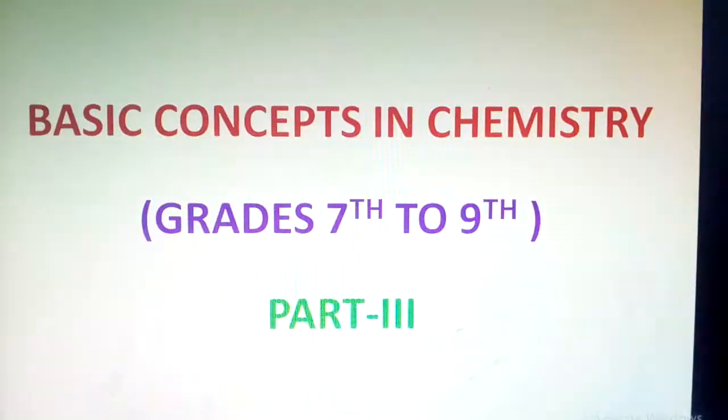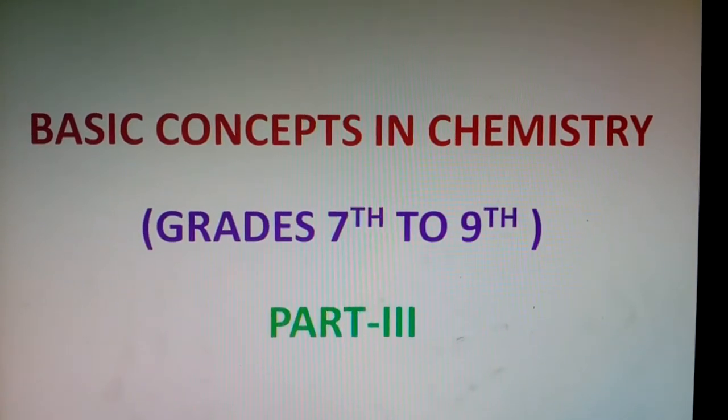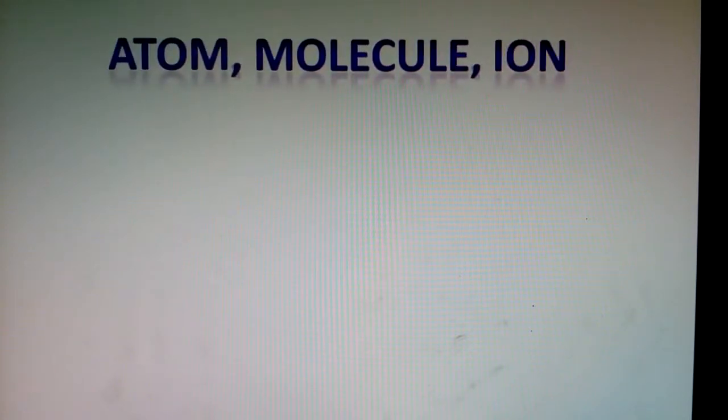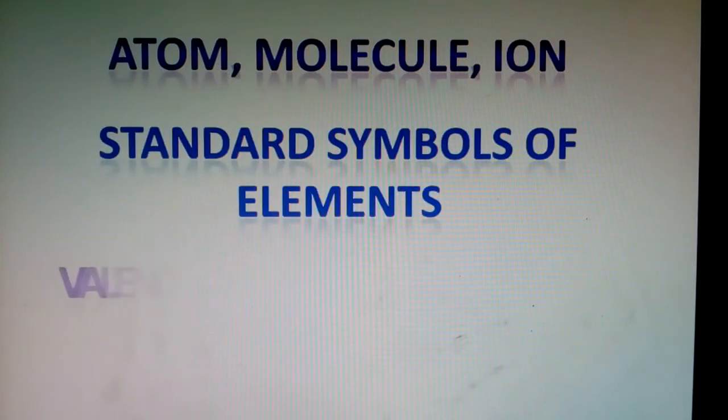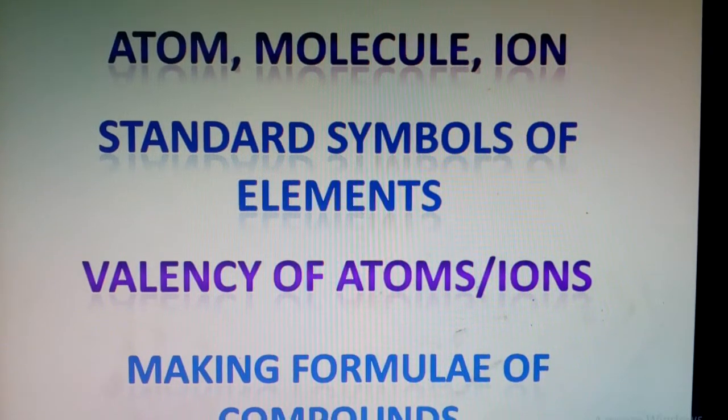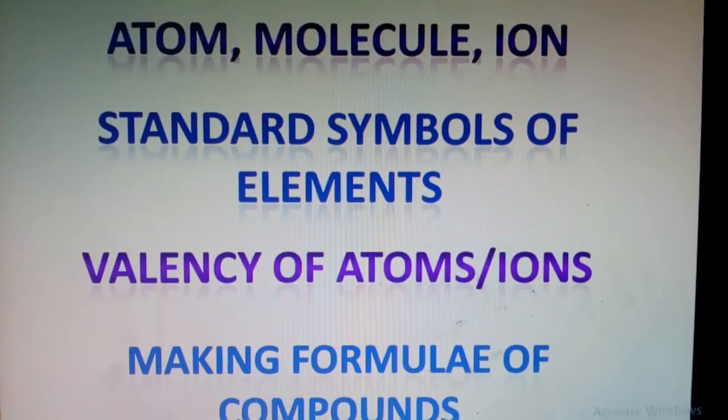Welcome to Learn Chemistry with More Kids. This is the third part of the series 'Some Basic Concepts in Chemistry' for grades 7 to 9. In the series, I've already talked about atoms and molecules. The remaining topics are ions, valency of atoms or ions, and making formulae of compounds. I've also discussed standard symbols of elements.